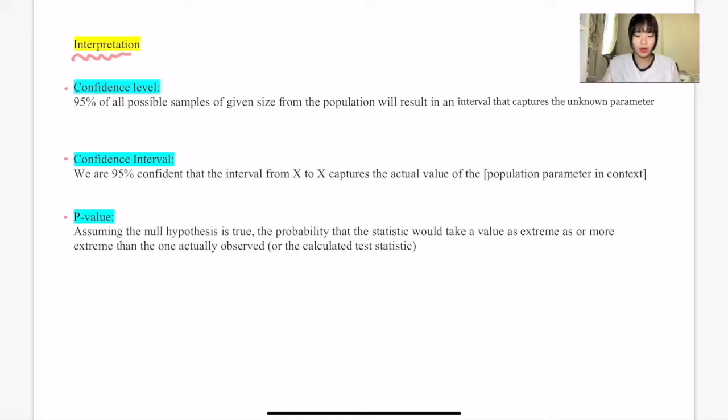If the question asks you to interpret the confidence level of, say, 95%, the highlighted part could be different on your test day. Even though most of the time College Board asks you to interpret 95% confidence level, it could be 90% or 85%, and you need to write the population parameter in context. The interpretation for confidence level: 95% of all possible samples of given size from the population will result in an interval that captures the unknown parameter.